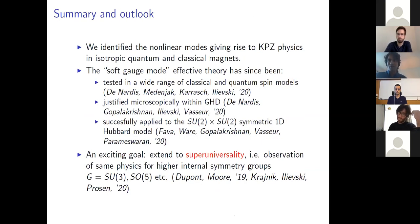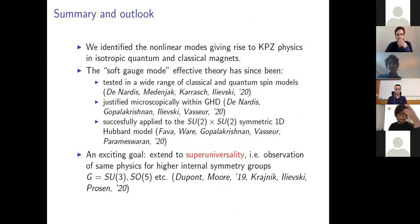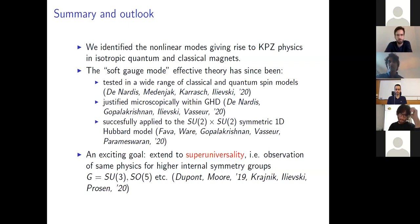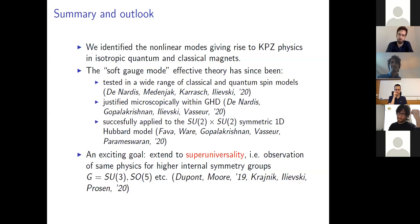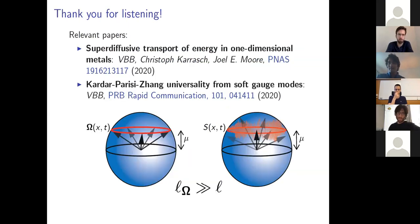To summarize some subsequent developments: this effective picture of a soft gauge mode being responsible for KPZ has been tested reasonably thoroughly, given a microscopic justification in the sense that Landau-Lifshitz solitons are the only thing that could be giving rise to this physics, and successfully applied to the Hubbard model. An exciting goal going forward would be to extend this idea to understand super-universality — the observation of the same physics for higher internal symmetry groups. Very naively, they all contain an SU(2) subgroup, so you could say that's what's happening, but it would be good to clarify that further.